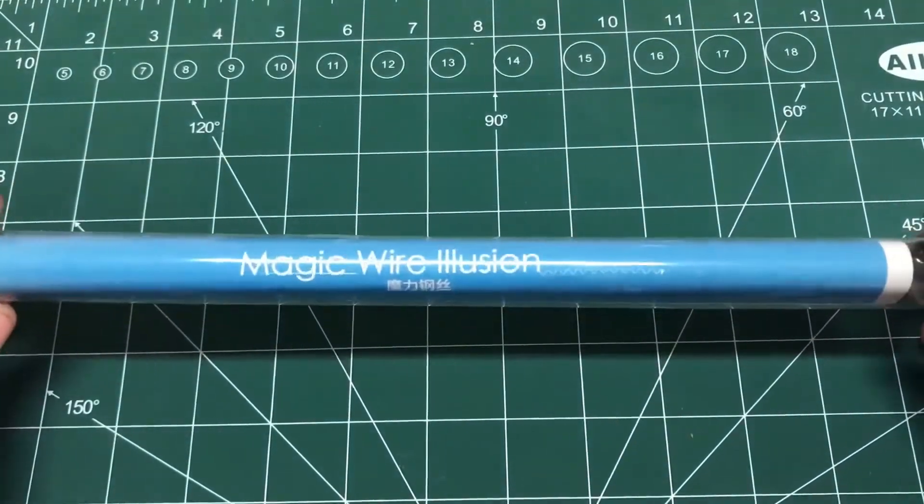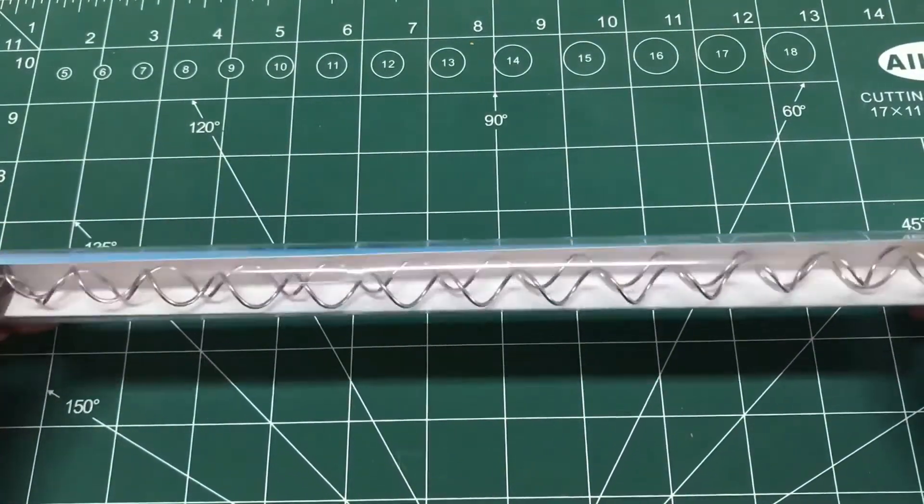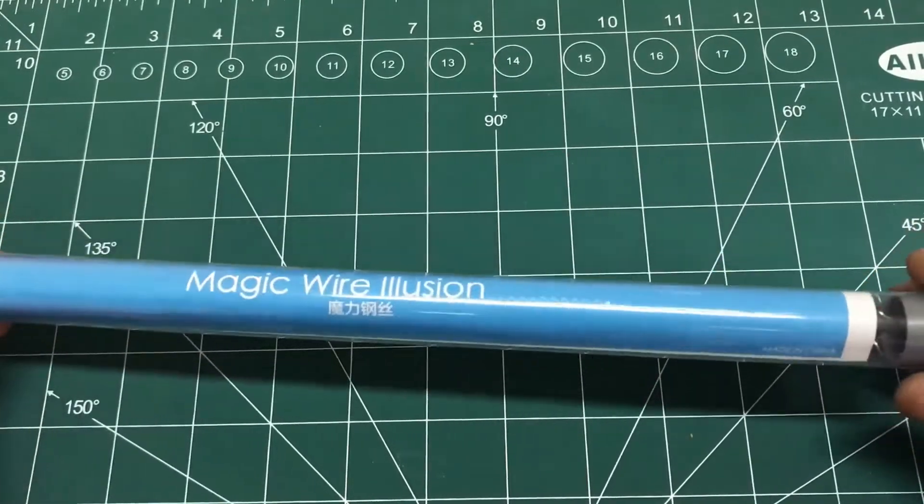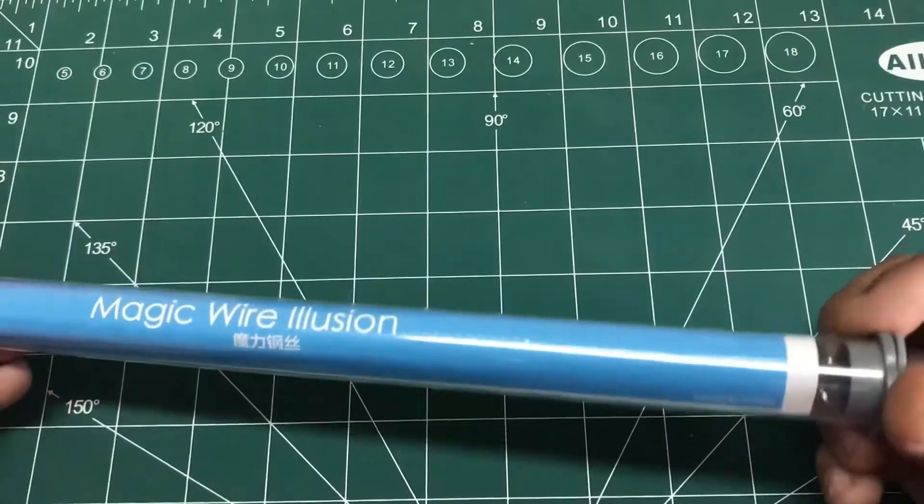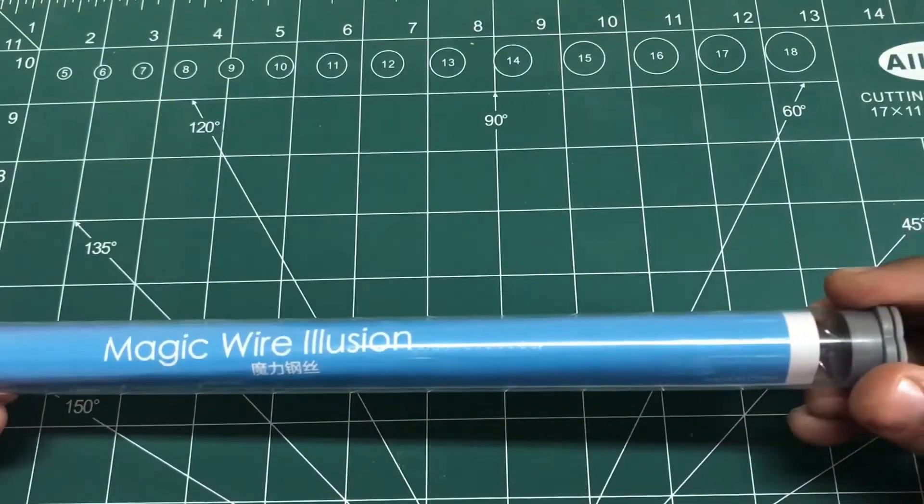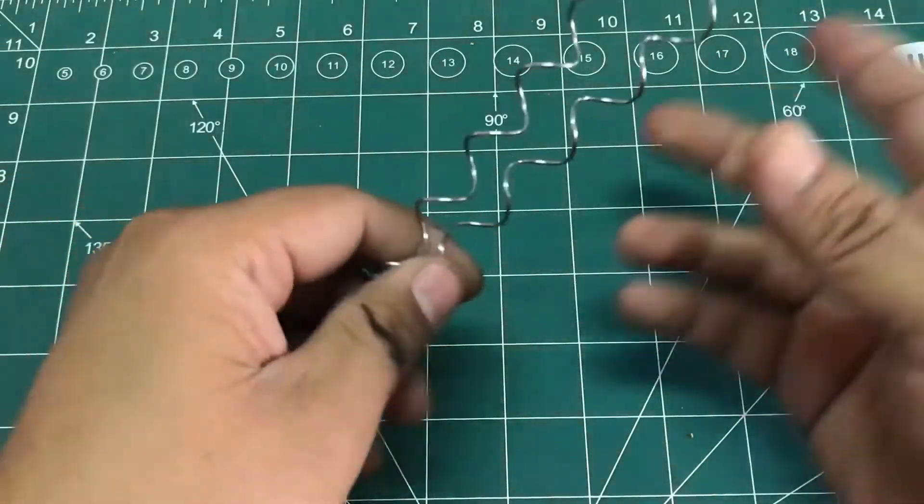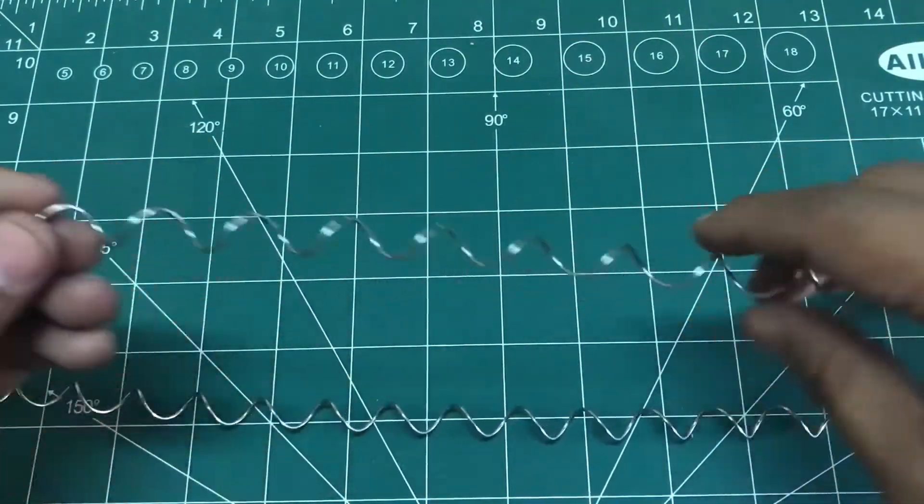I got a really cool toy, it's known as wonder wire, it's sort of like an illusion. Let's look at this. It's two pieces of helical wires like this.